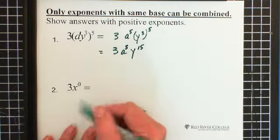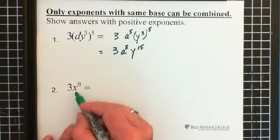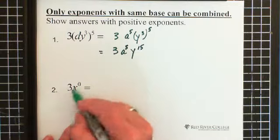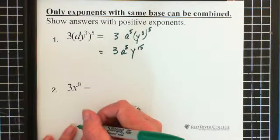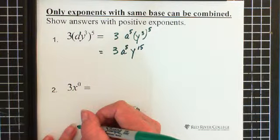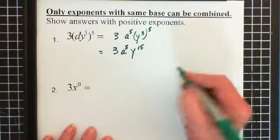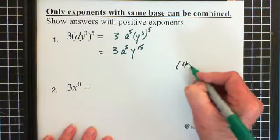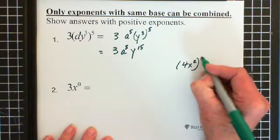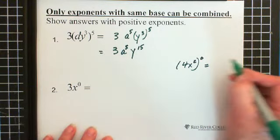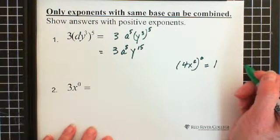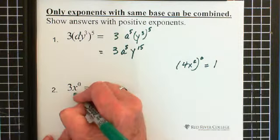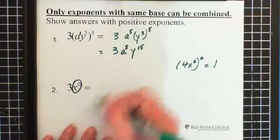Now, you have to think about what we have here. We have 3 times x to the power of 0. What is x to the power of 0? Anything to the power of 0 is 1. Doesn't matter how weird it is, how strange. 4x squared to the power of 0 equals 1. So anything to the power of 0 equals 1. So then this is essentially 1.